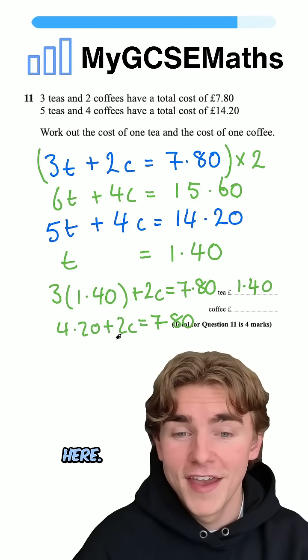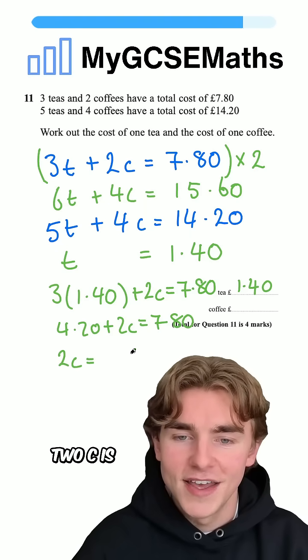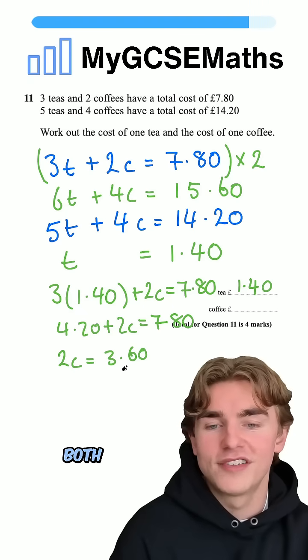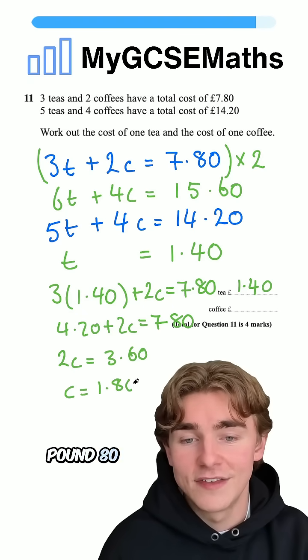Hopefully I'm not going off the bottom here. Subtract four pound 20 from both sides. We're going to get 2c is equal to three pound 60. And then we can divide both sides by two. Three pound 60 divided by two. We're going to get that c is equal to one pound 80.